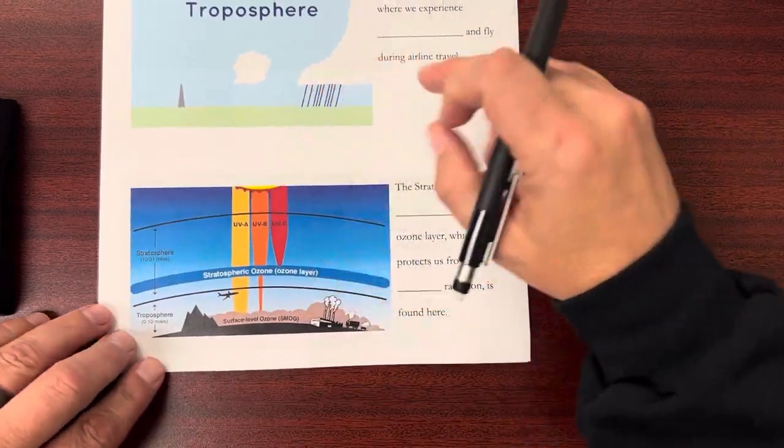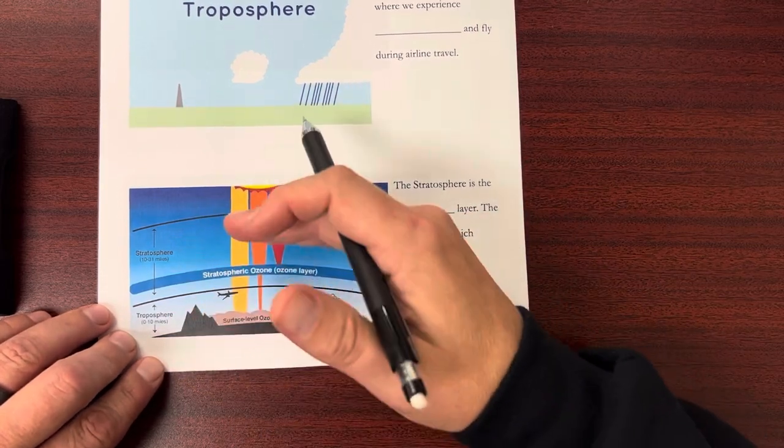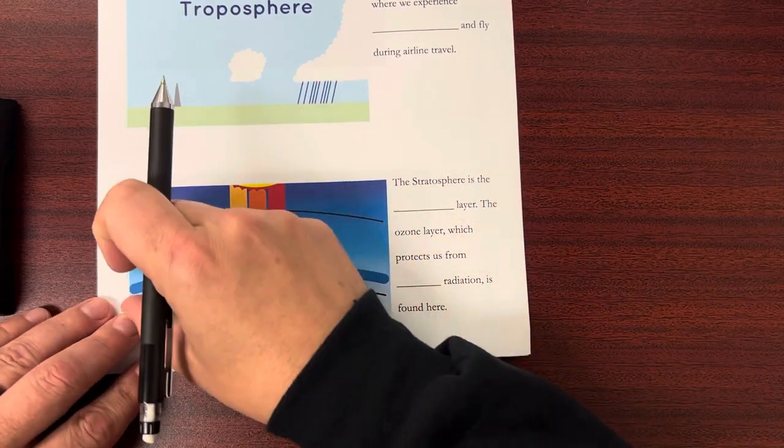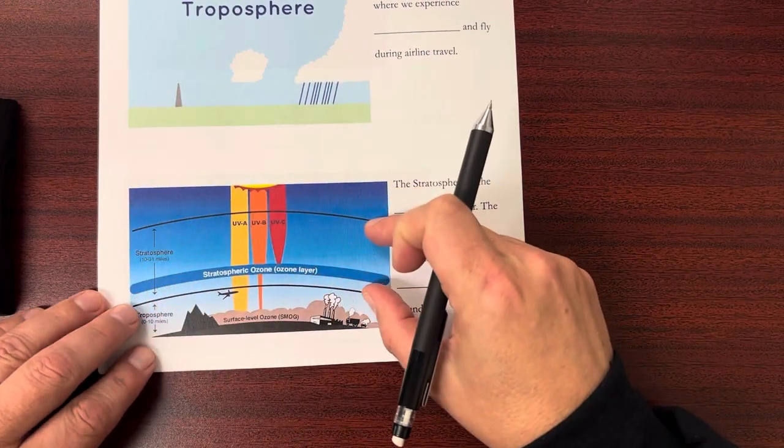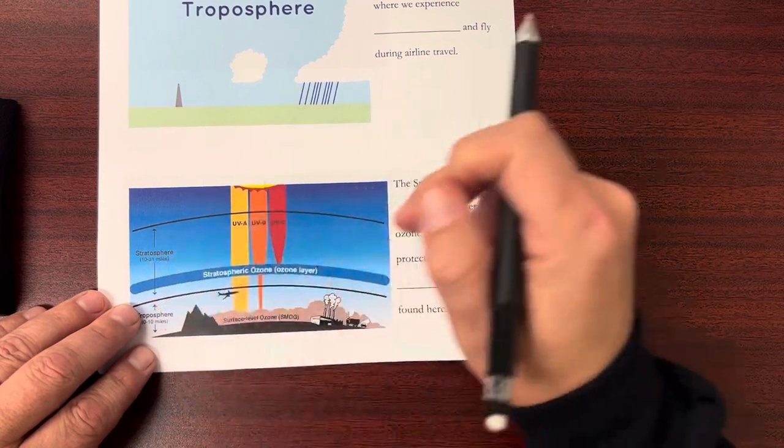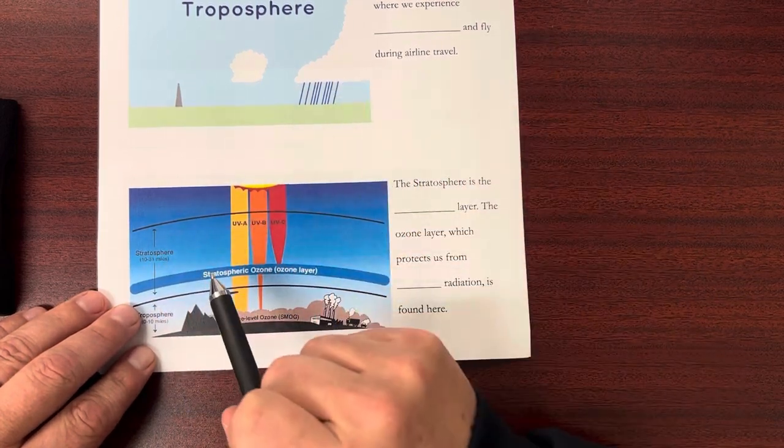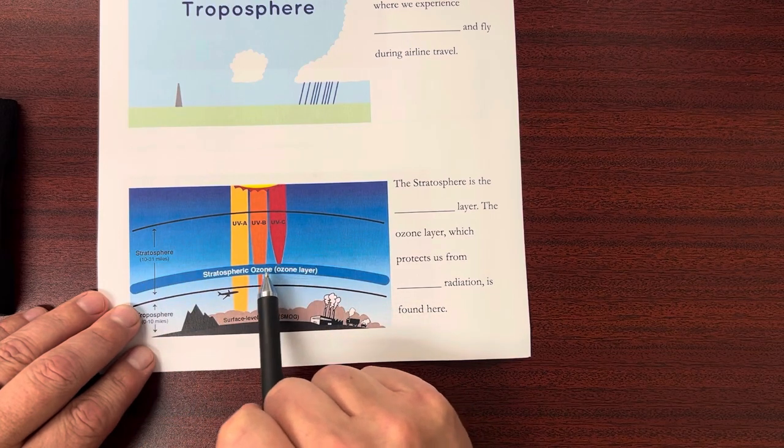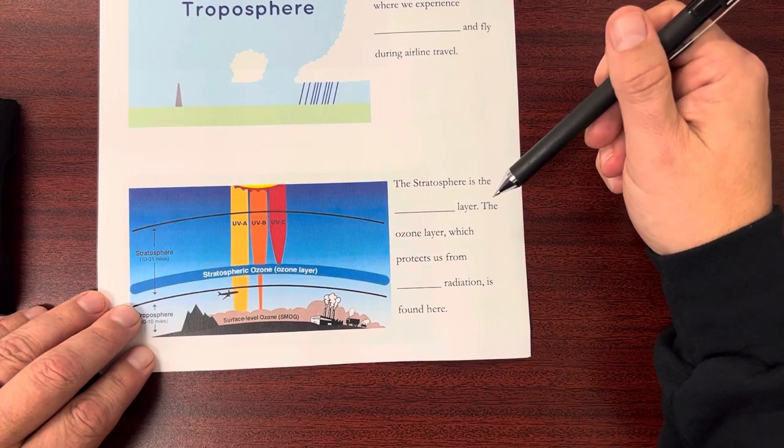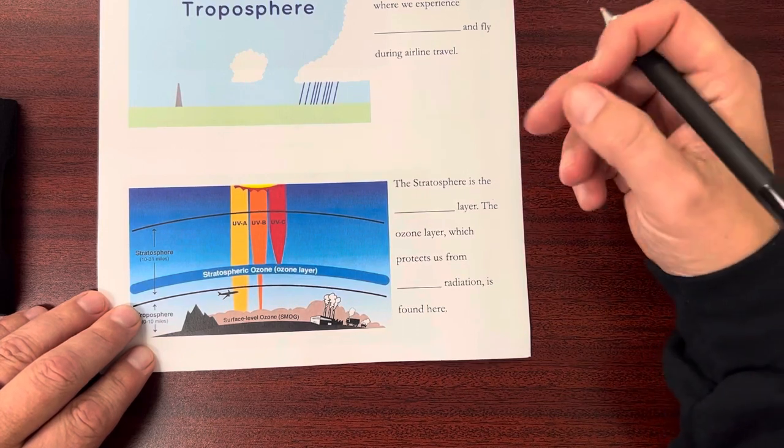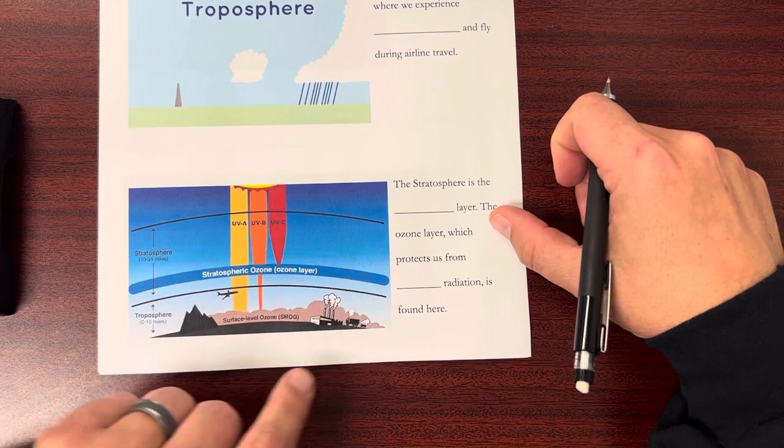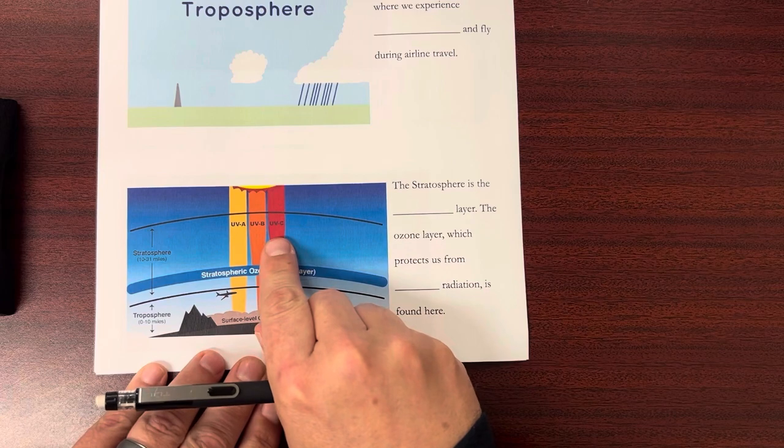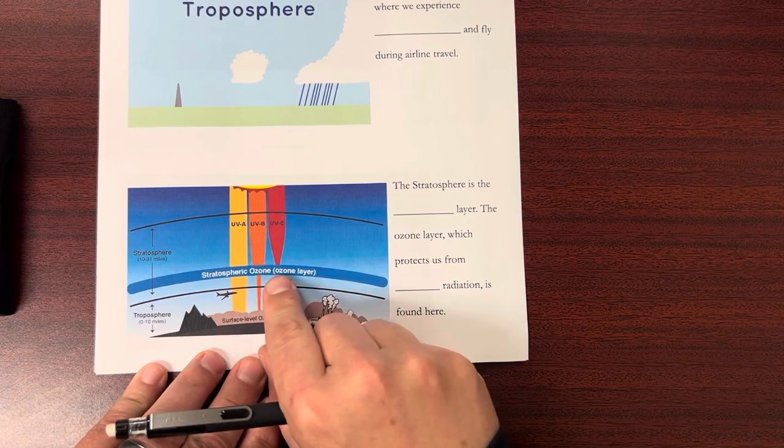Going up to the next one, you'll see a lot of different images here. Some have other layers, some don't. But the next one above the troposphere is the stratosphere, which looks like it's about 20 miles or so. The important thing is that within the stratosphere is the ozone layer. The stratosphere is the second layer, and the ozone layer, which protects us from UV radiation, is found here. You can see the different types of UV radiation and what gets blocked by the ozone layer.